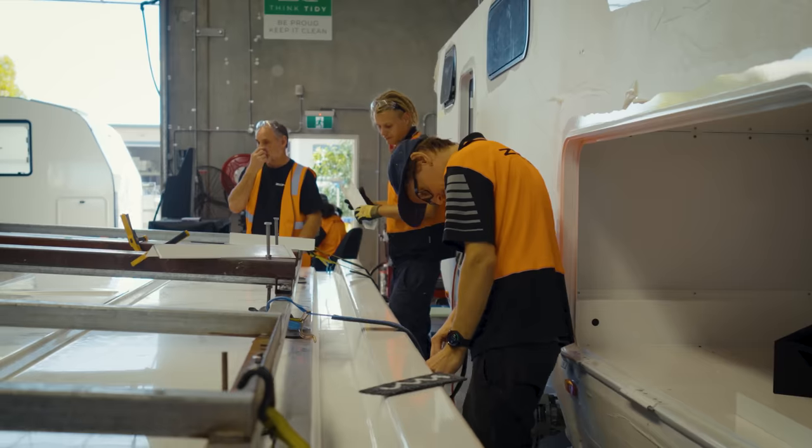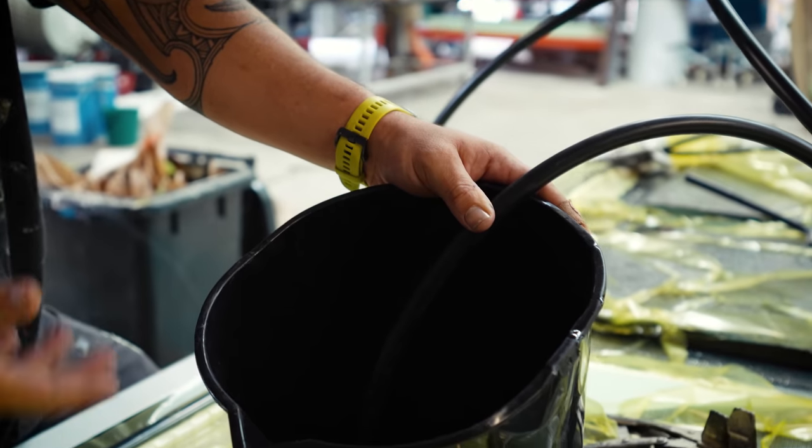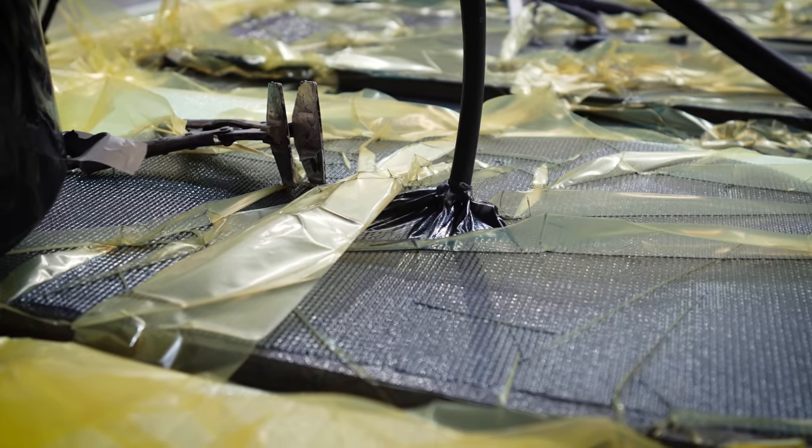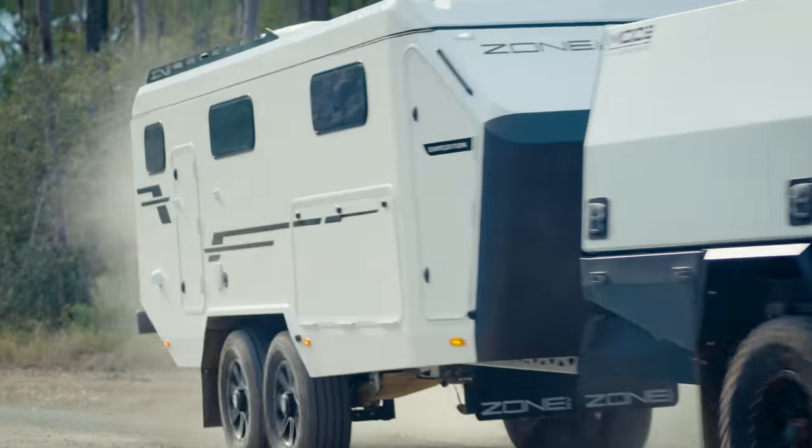What we've done by going fully molded is developing something that has got less joins, less moving parts. And just through the process of vacuum infusion, which is effectively a fully closed molded way of making this product, inherently we end up with lighter and stronger.